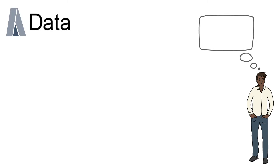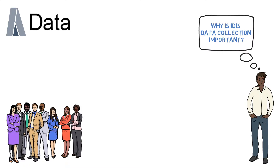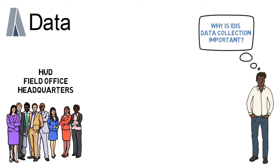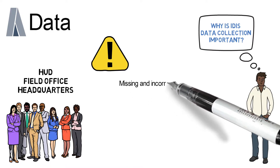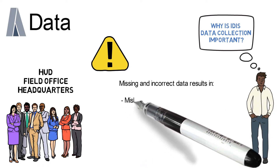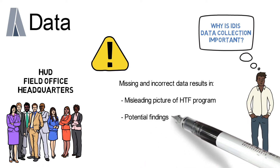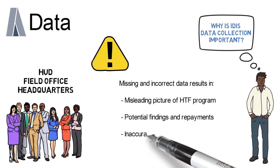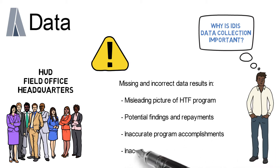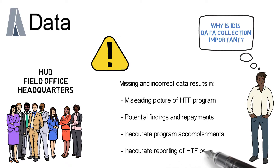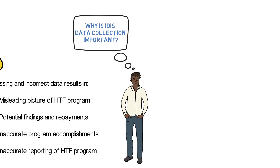Let's talk about data. In terms of data collection, the importance of accurate and timely data reporting cannot be overstated. It is important to understand how your Housing Trust Fund data is utilized by HUD. IDIS data is used by both the field office and headquarters to review program compliance. Missing and incorrect data results in an inaccurate and possibly misleading picture of a grantee's Housing Trust Fund program, and could lead to potential findings and repayments. Incorrect IDIS data can also lead to inaccurate reporting on program accomplishments, which reflects unfavorably on the overall Housing Trust Fund.